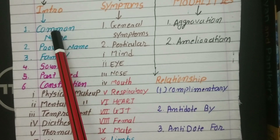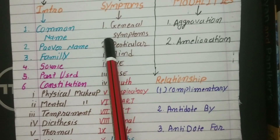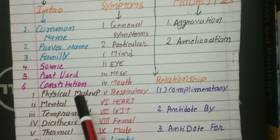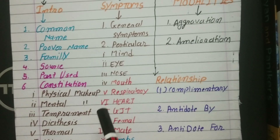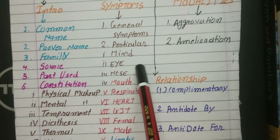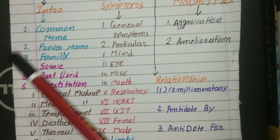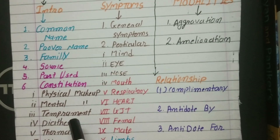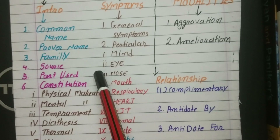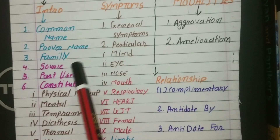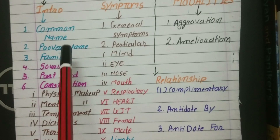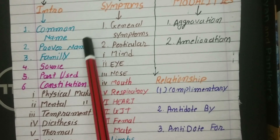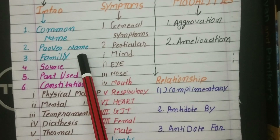You must write the heading first — for example, write the heading 'Common Name' and then write the actual name underneath. Similarly, when you write symptoms, write the heading first and then all the points. If you write a whole paragraph without headings, it confuses the examiner. But if you write all the points under clear headings, it is easy for the examiner to check your paper.